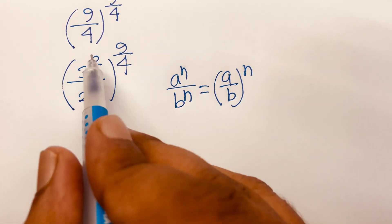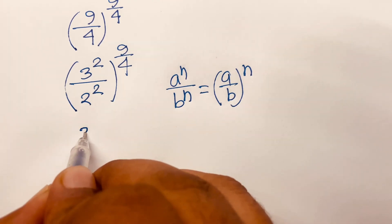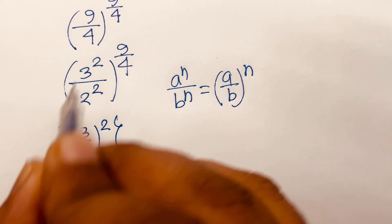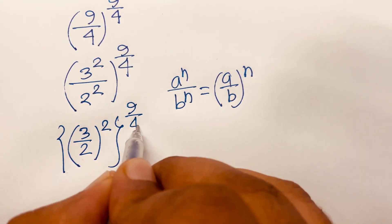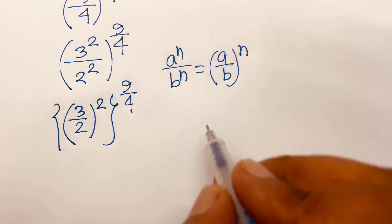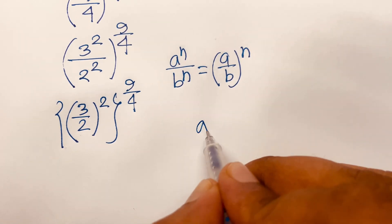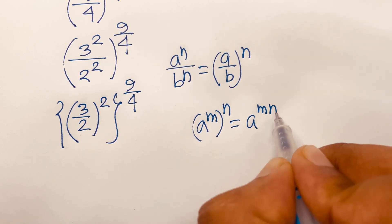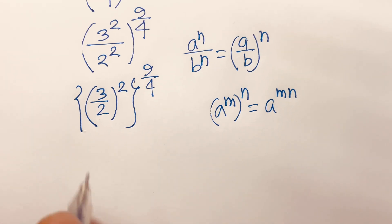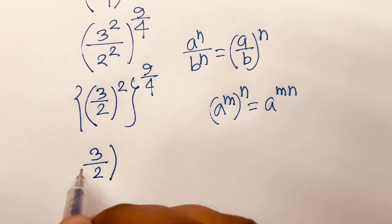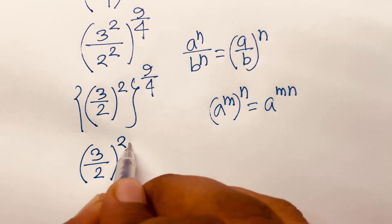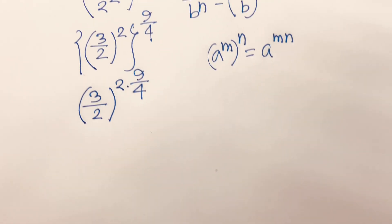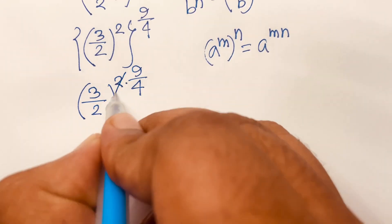Since the exponent is the same, it becomes (3/2) to the power 2, all to the power (9/4). Then using the rule (aᵐ)ⁿ = aᵐⁿ, we get (3/2) to the power (2 × 9/4). Simplifying: 2 × 9/4 — dividing 4 by 2 gives 2 — so we get (3/2) to the power (9/2).